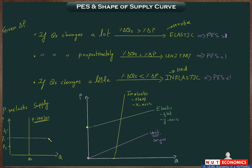A straight horizontal line means perfectly elastic supply — supply that is so responsive that at any price other than that specific point, there is no supply. If price falls, producers stop producing entirely, lowering quantity supplied to zero. If price rises, they increase quantity supplied to infinity. Just remember: a straight horizontal line means perfectly elastic supply.